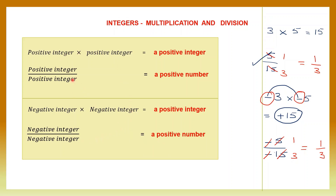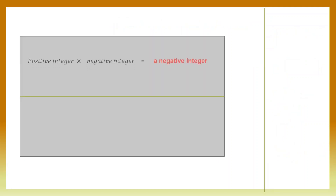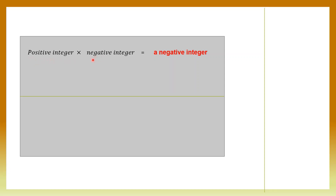Keep this in mind: when you multiply the same signs or divide the same signs, your answer is positive. Now what if the signs are different? When you take a positive integer and multiply it with a negative integer, your product is a negative integer. Example: minus 3 into 5 — one is negative, one is positive, so signs are different and your answer is negative. Then multiply the numbers: 3 fives are 15, so this is minus 15.